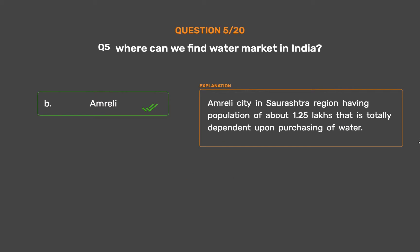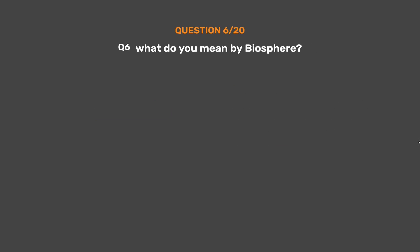Amrili city in the Saurashtra region, having a population of about 1.25 lakhs, is totally dependent upon purchasing of water.